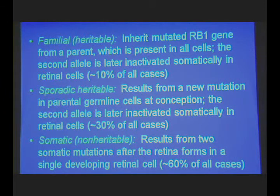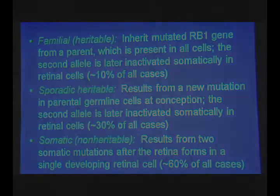The somatic type results from somatic mutations after the retina forms in a single developing retinal cell. This suggests that at least for those latter two types, there are factors other than genes that influence the occurrence of this disease — and exactly what might they be?